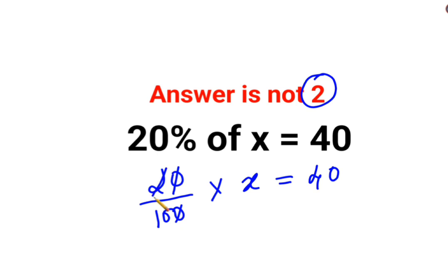So now this and this gets cancelled - 20 and 100 become 1 and 5. So basically you're getting x/5 = 40.